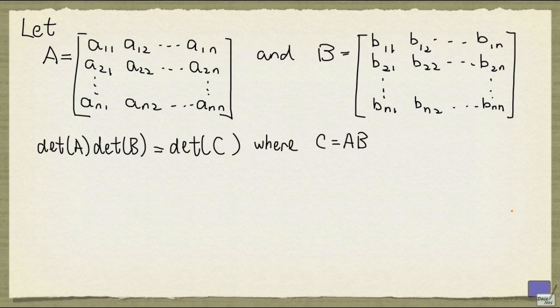We have seen a definition for the determinant of a square matrix in a previous video. We now look at one important property of determinants. Let A and B be n by n matrices, as shown here.